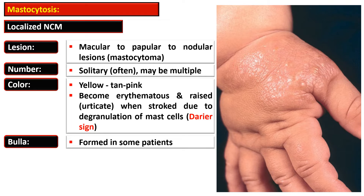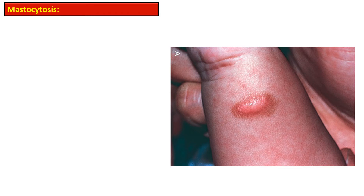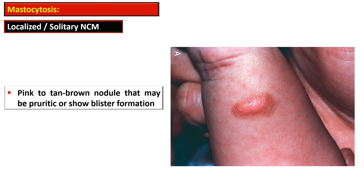It is converted into a bulla in some patients. This gross picture shows a solitary nodular cutaneous mastocytosis with a pink to tan-brown nodule that may be pruritic or show blister formation.